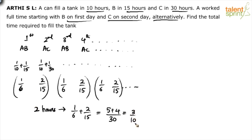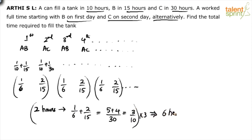3/10 becomes 1 at 10/10, but we can't multiply 3 to get exactly 10. So bring it as close as possible. Multiply by 3: 2 hours × 3 = 6 hours, and work done = 3/10 × 3 = 9/10. So 90% of the work is done in 6 hours, leaving only 1/10 remaining.